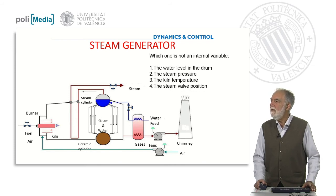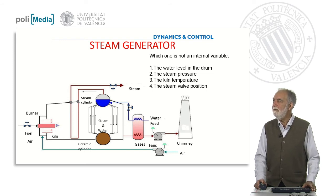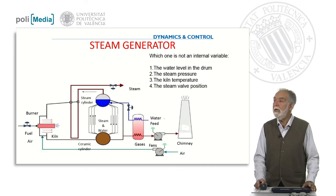The question is: which one is not an internal variable? The water level in the drum? The steam pressure? The kiln temperature? Or the steam valve position? Please think about that.